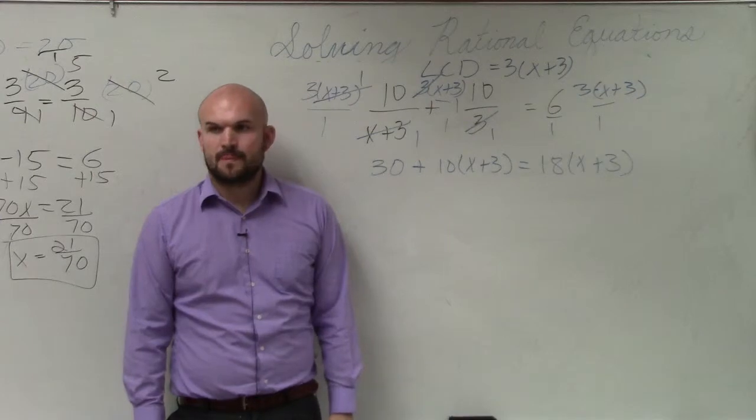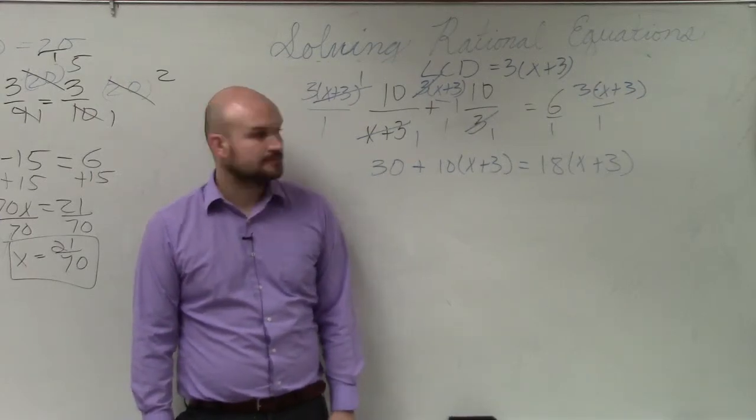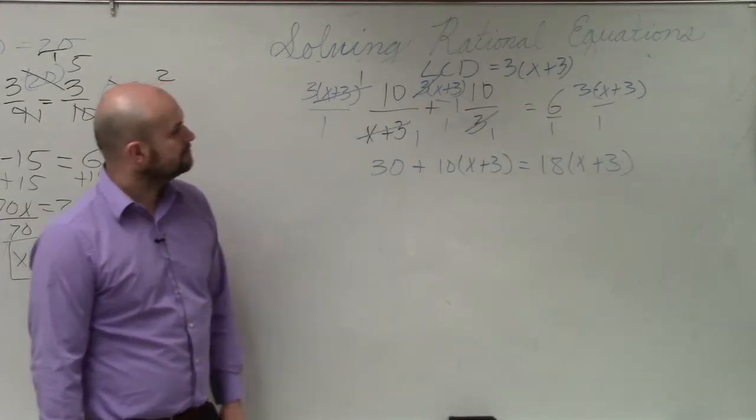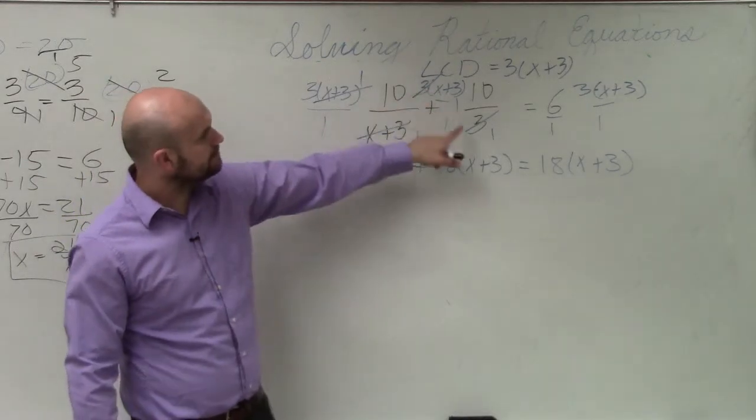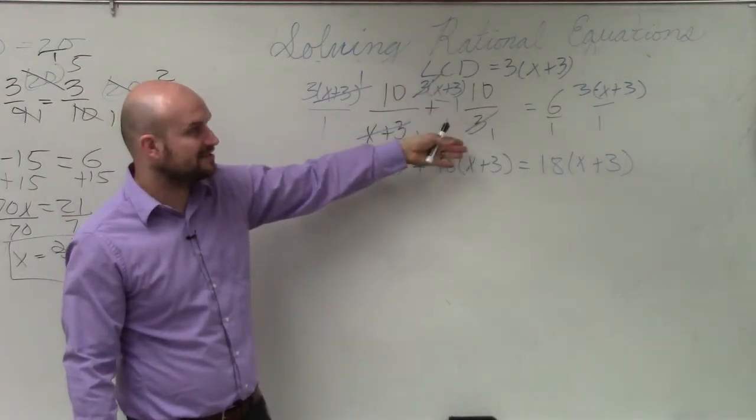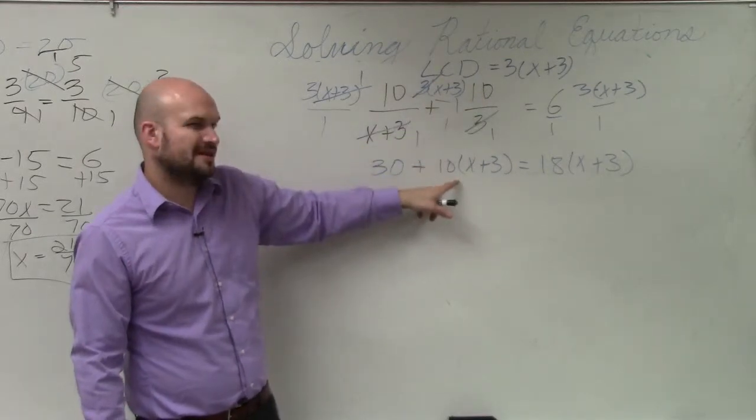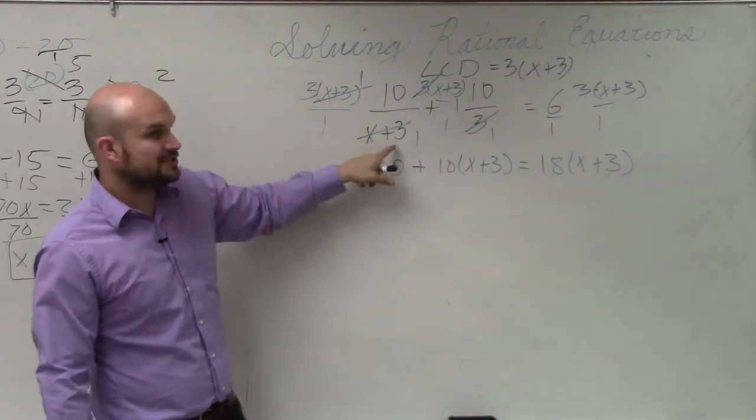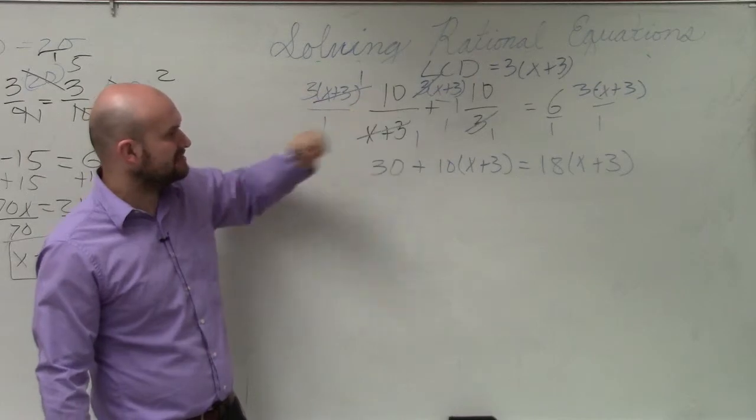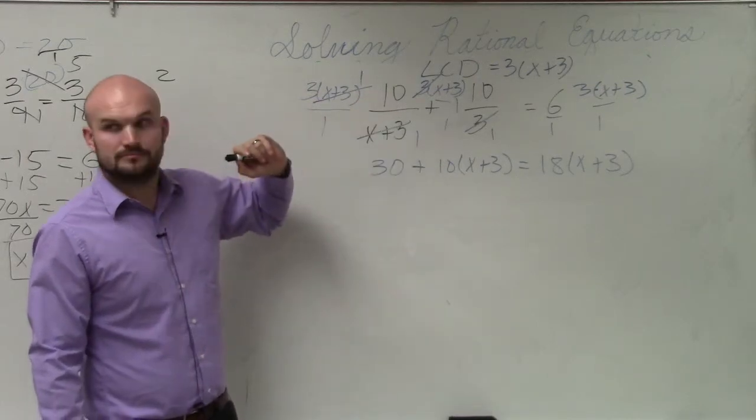Does everybody see that? How do you get 10 to the x? Because you can't. The 3's canceled out, or 3's divided to 1, and I'm just left with x plus 3 times 10, which I wrote the 10 in front. Over here the x plus 3 is divided to 1, I'm just left with 3 times 10.